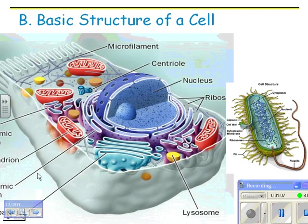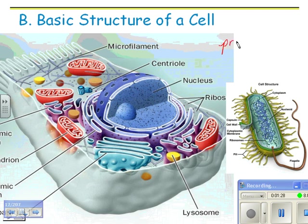The basic structure of a cell — here's a cell that might be one of your cells; it could be an animal cell. People are animals, so this could be a cell in a person. Here's a bacterial cell. There are two basic types of cells: prokaryotic and eukaryotic.